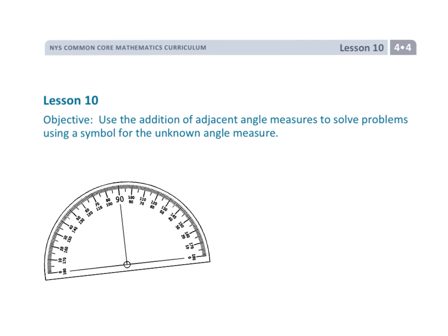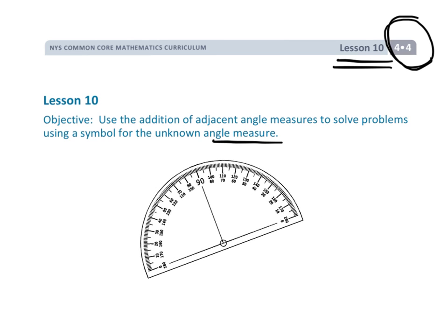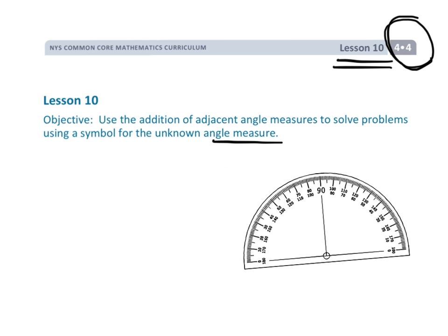This is Grade 4, Module 4, Lesson 10, and in this lesson we're going to be measuring angles. What's really cool is this time instead of using a protractor—now the thing about a protractor...